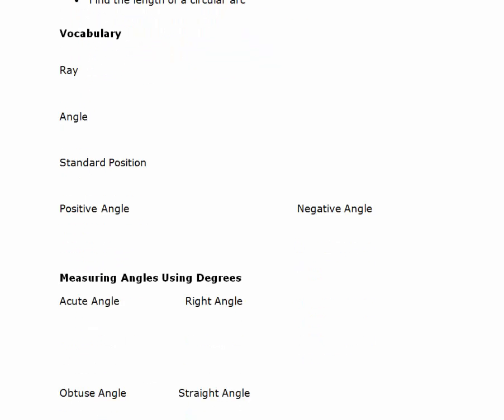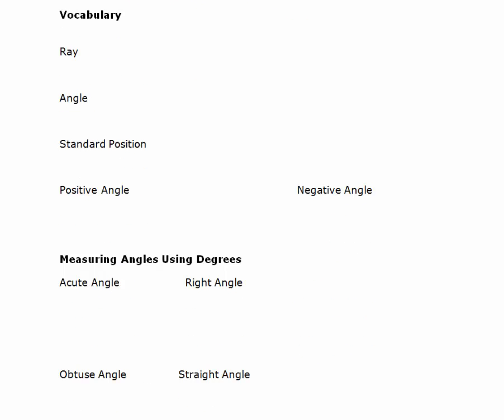First we need to go over some vocabulary. We'll start with the definition of a ray. A ray is basically a half line. Where a line goes on infinitely in two directions, a ray has an endpoint and goes on infinitely in only one direction.